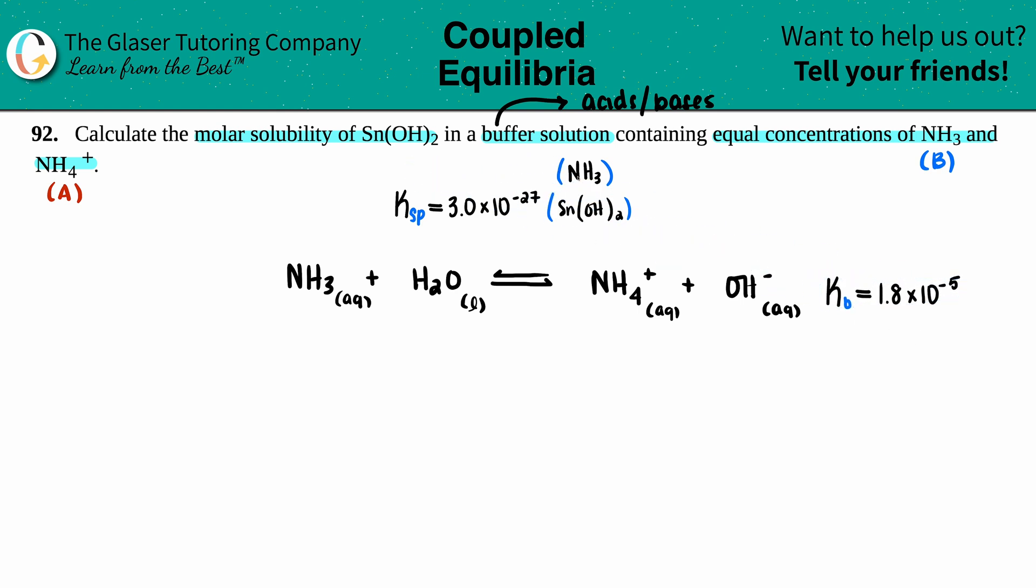Now let's write the other equation for Ksp. Remember, you're starting with that compound and breaking it into its two ions. In this case, we have Sn(OH)2—that's the solid—and this will be dissociating at equilibrium into the two ions.